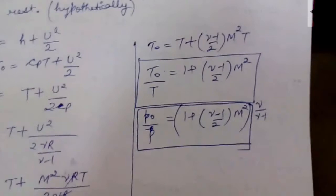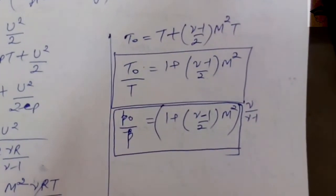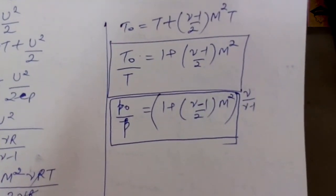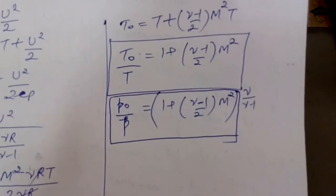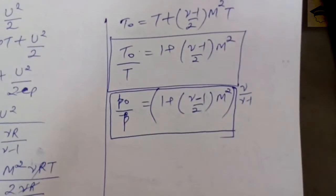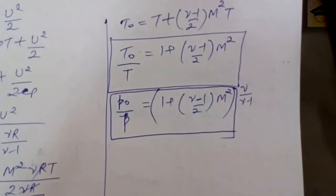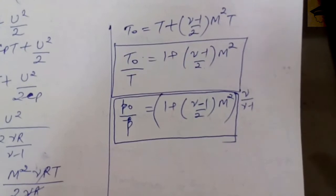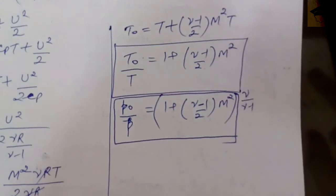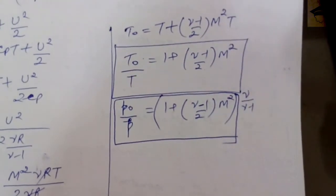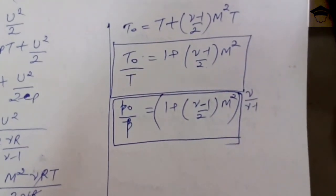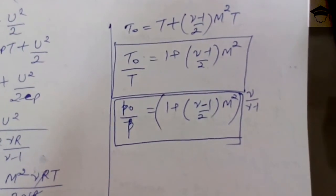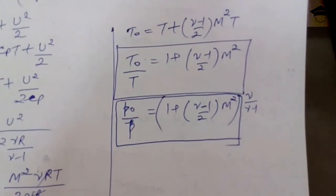Similarly, using the isentropic relation T₂/T₁ = (p₂/p₁)^(γ/(γ−1)), we can write the stagnation pressure ratio as p₀/p = [1 + (γ−1)/2 · M²]^(γ/(γ−1)).